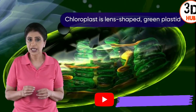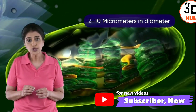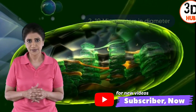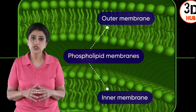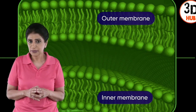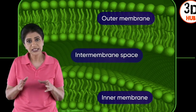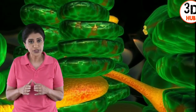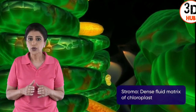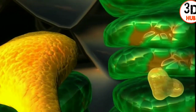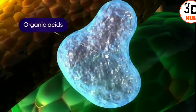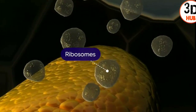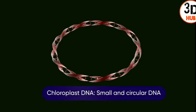A chloroplast is a lens-shaped green plastid about 2 to 10 micrometers in diameter. It has an envelope consisting of two phospholipid membranes separated by the intermembrane space. The space enclosed by the inner membrane is filled with a dense fluid called the stroma.